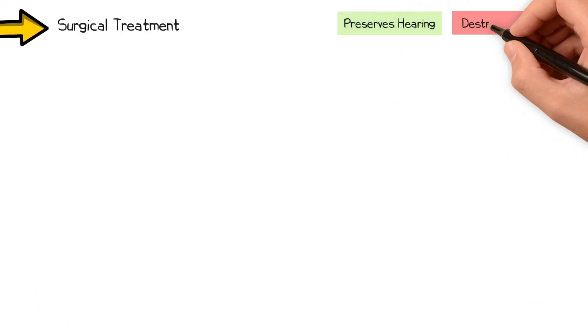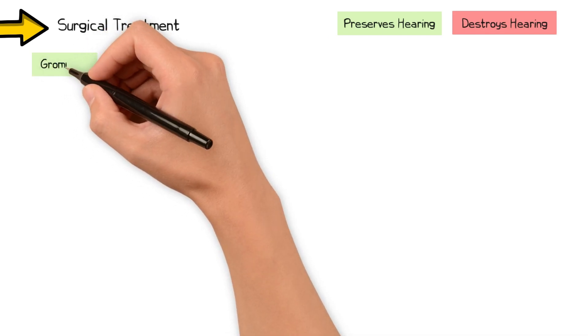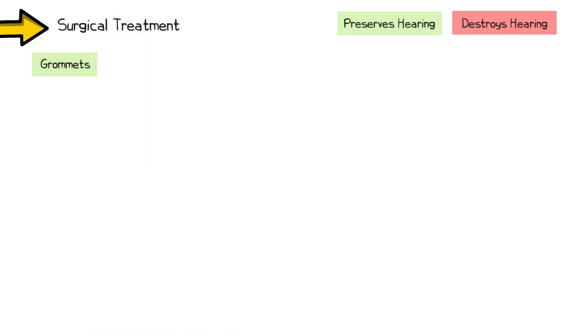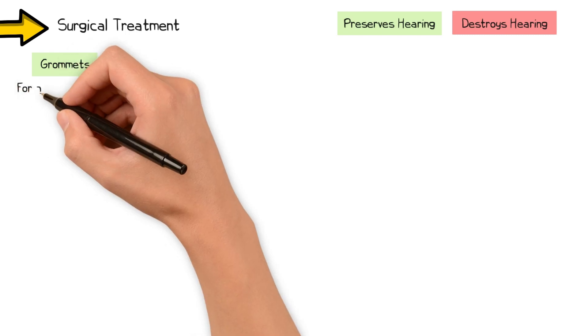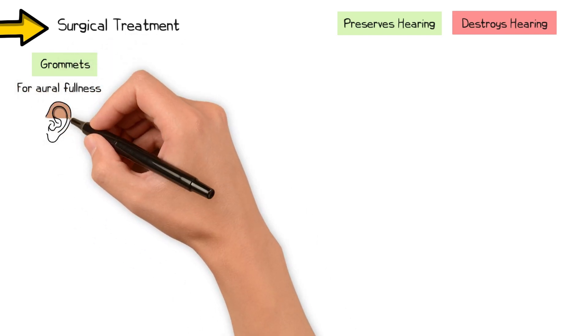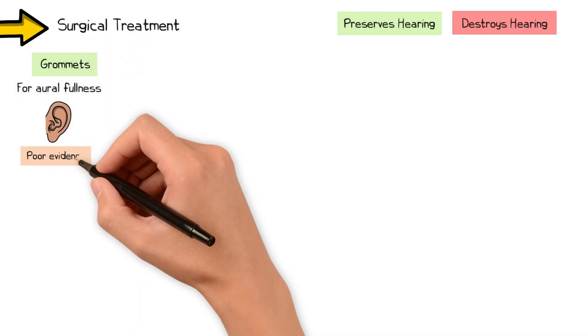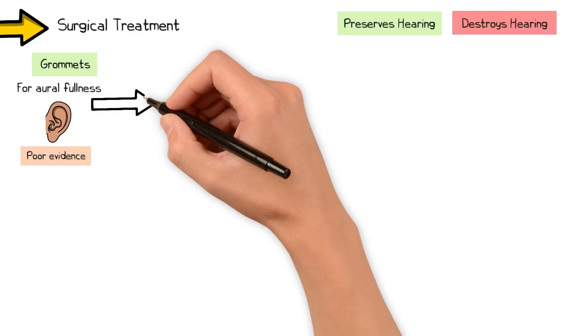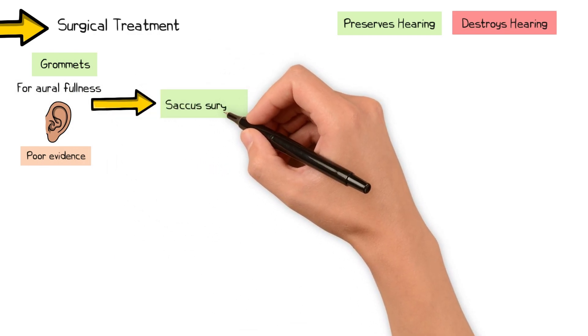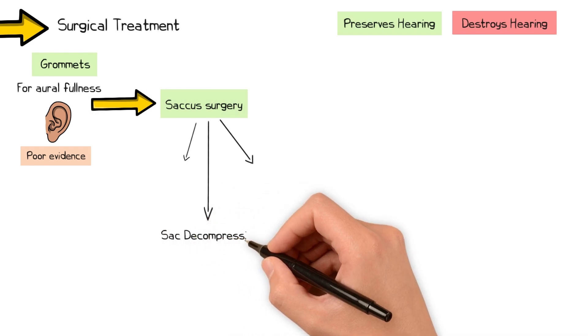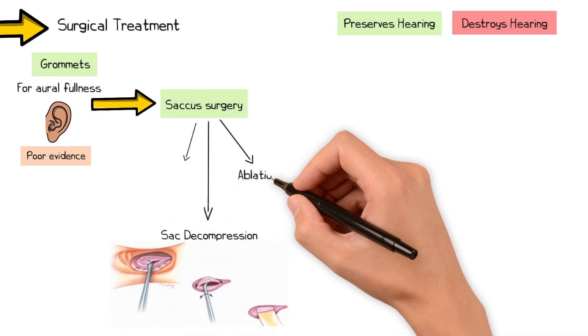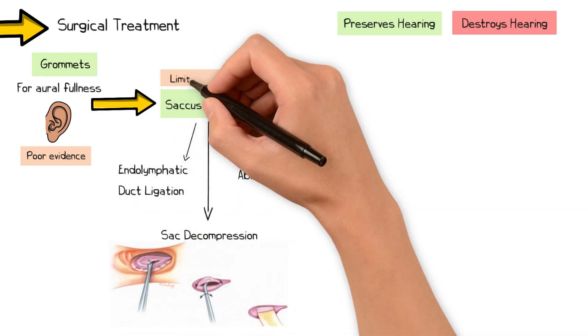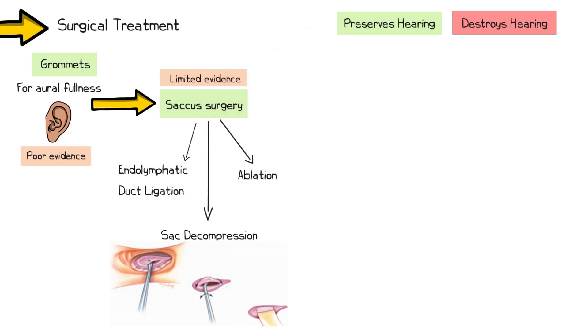Surgical treatments can either preserve or destroy residual hearing. Hearing preservation options include ventilation tube placement, which in some cases can be useful for aural fullness, though again the evidence remains poor. A variety of operations have been proposed on the endolymphatic sac. These include sac decompression, ablation, or ligation of the endolymphatic duct. All of these should preserve hearing, but are supported by limited evidence.